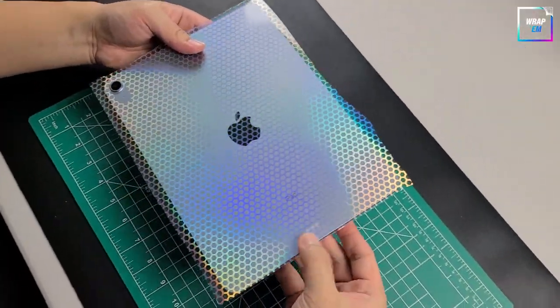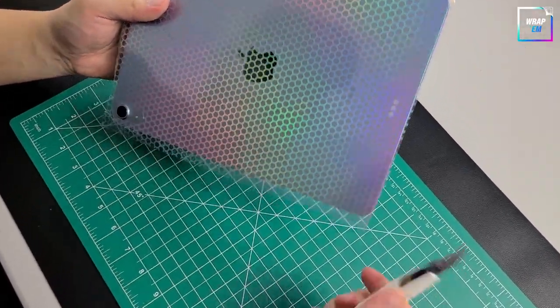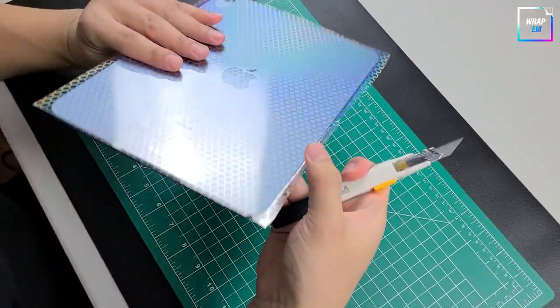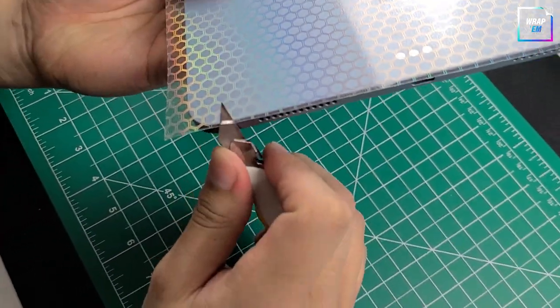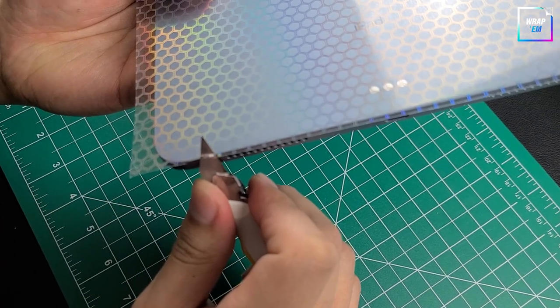Once you're done trimming, now it's time to clean up the edges. Put the blade flush against the edge of the iPad and just glide your blade along the edge.